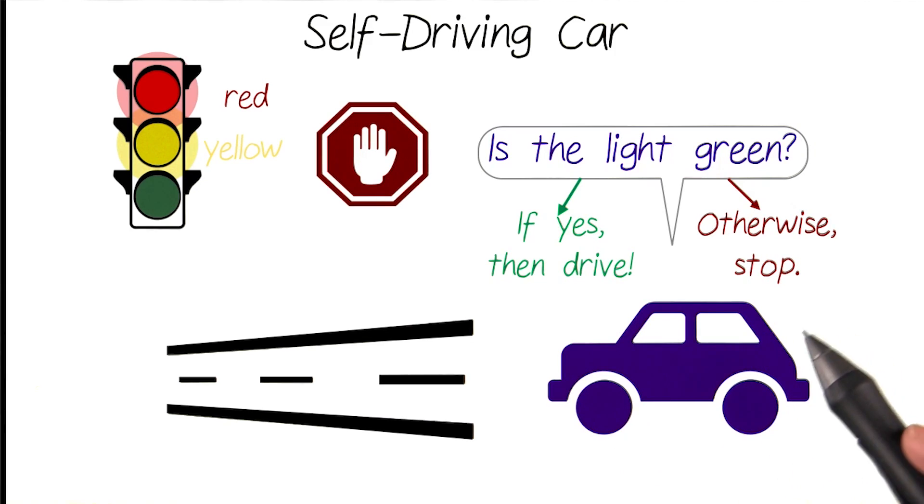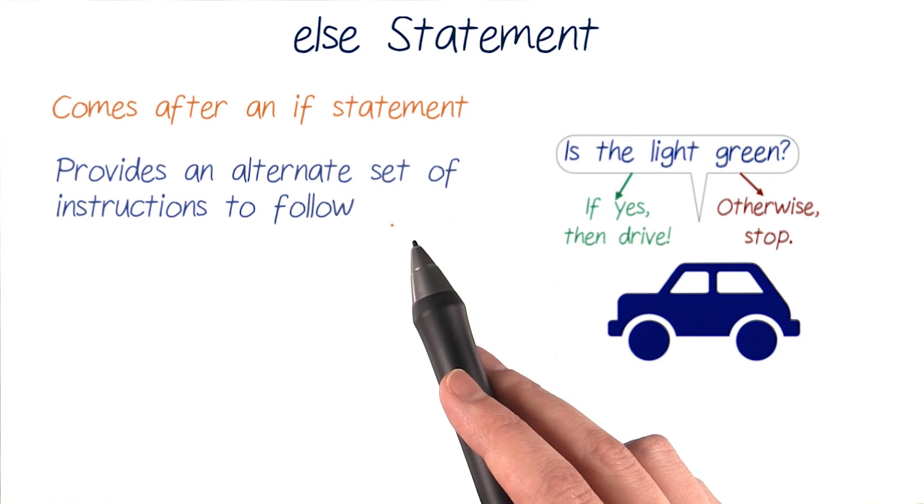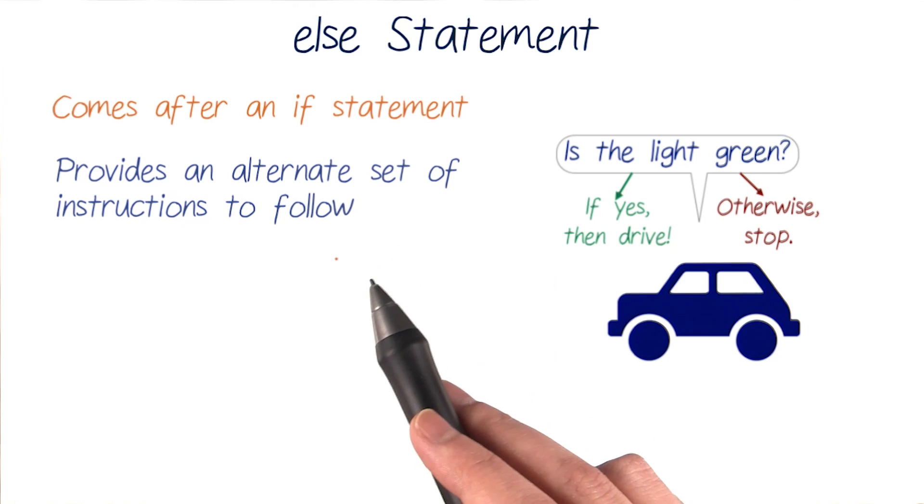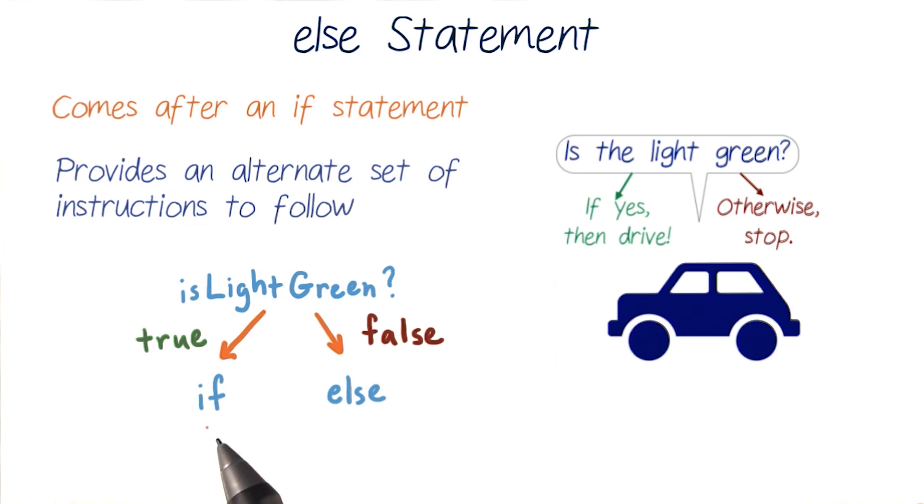And Java gives us an easy way to do this with an else statement. An else statement can only come after an if statement, and it lets us provide an alternate set of instructions to follow for when the if test condition is not met. Using these together is called an if-else statement, and it gives two possible decision pathways for our computer to take.